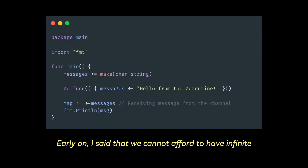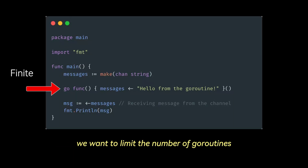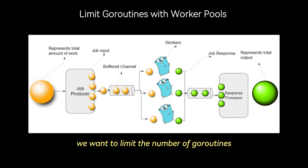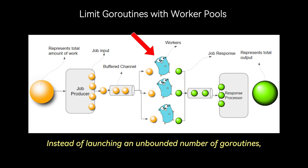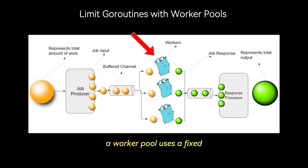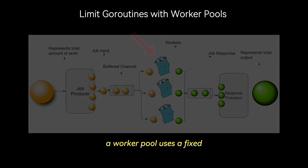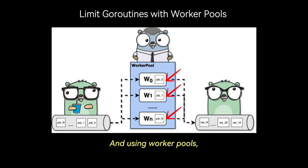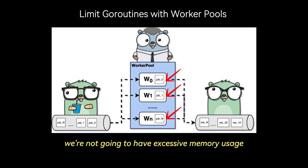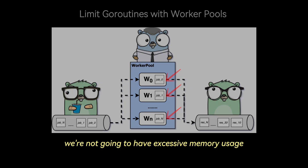Since we cannot afford infinite goroutines, in some cases we want to limit their number using worker pools. Instead of launching an unbounded number of goroutines, a worker pool uses a fixed number of goroutines to process tasks concurrently, avoiding excessive memory usage.